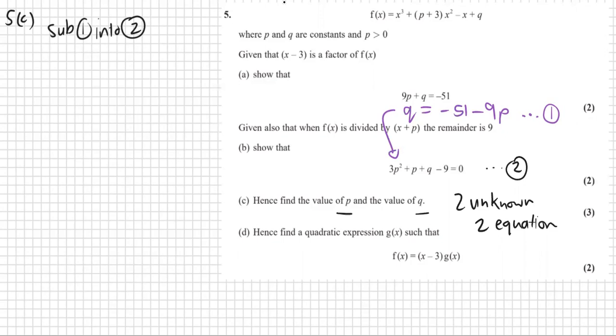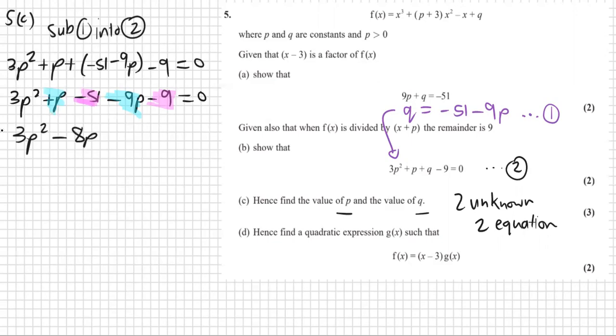So we're subbing equation one into equation two. So every time I see a Q, I write what Q is in equation one. So 3P squared plus P plus there's a Q, so it's minus 51 minus 9P minus 9 equals to zero. Simplify this. 3P squared plus P minus 51 minus 9P negative times a positive is still negative minus 9. Let's look at any like terms. So we have a P squared term, no like terms. We've got a P and 9P and then we've got our constants. So we end up with 3P squared, 1P minus 9P is minus 8P, and negative 51 minus another 9 is minus 60 equal to zero.